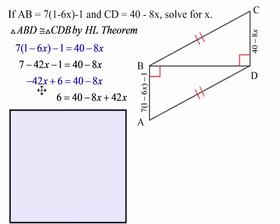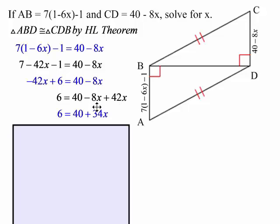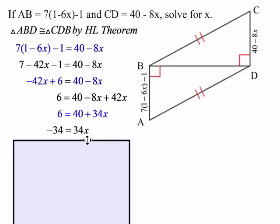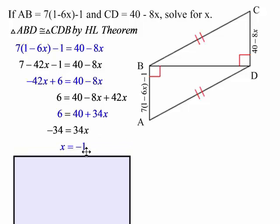Then I added the 42x to both sides. Combined those like terms. Subtracted the 40. And then I divided both sides by 34. So I come up with x is negative 1.